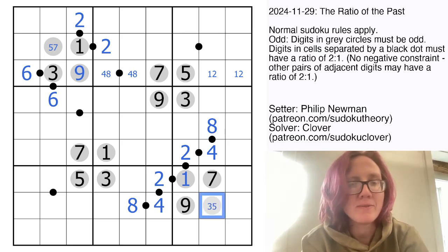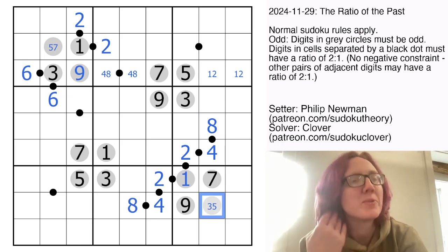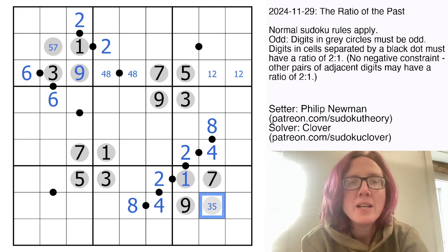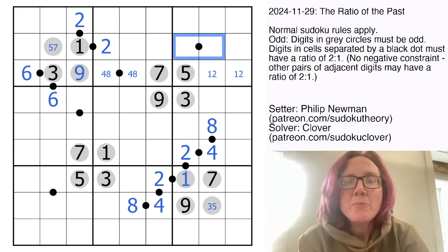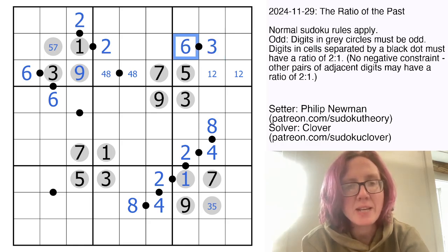This cell has to be 3 or 5 because it's odd, and we've already used 1, 7, 9 in the region. Here we can't use 1 or 2. And we also can't make it a 4, 8 pair because this cell can't be either 4 or 8. Therefore this has to be a 3, 6 pair in that order because there's a 3 already in column 7.